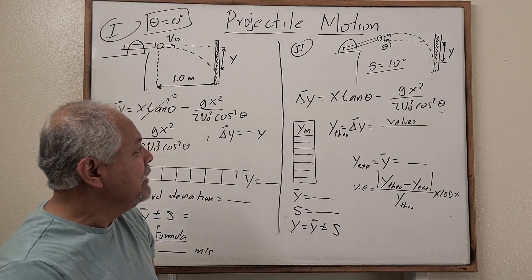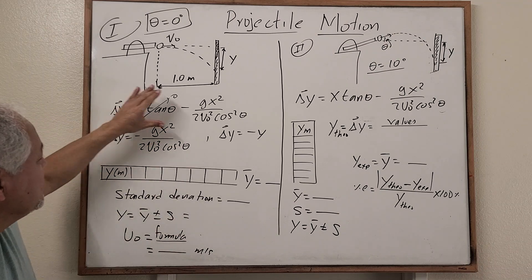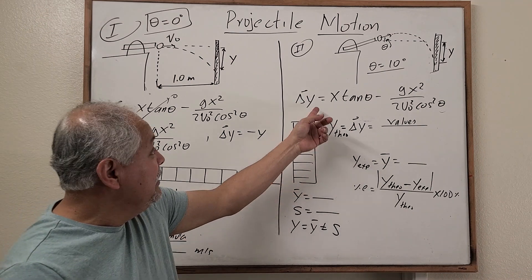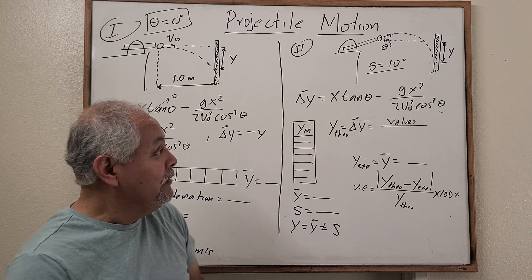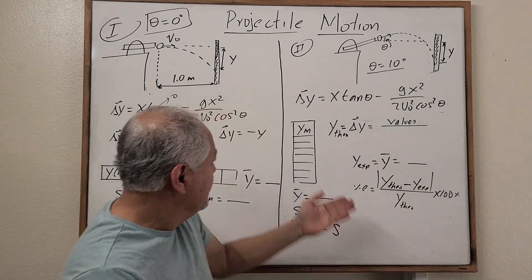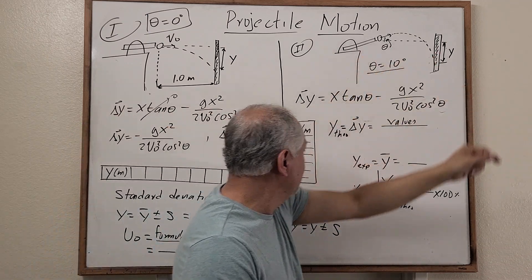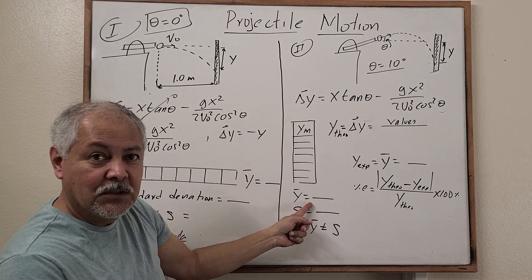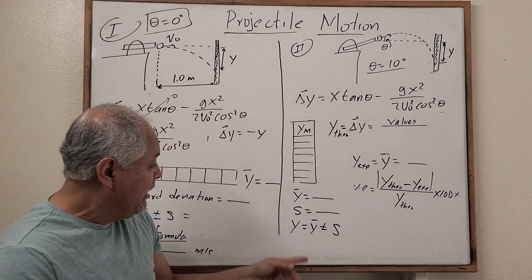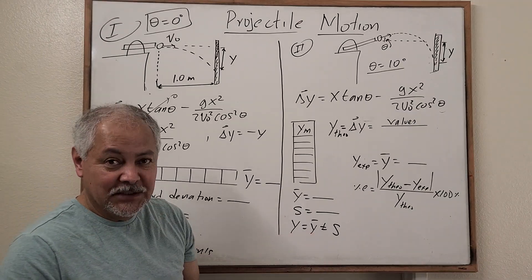We repeat the same steps using the same formula for both cases. Note that at 10 degrees, this term is not cancelled because tangent of 10 degrees is not zero. Let's do 10 to 12 trials to find the impact distances from the horizontal. Take the average and calculate the standard deviation, then represent that distance as the average plus or minus the standard deviation.